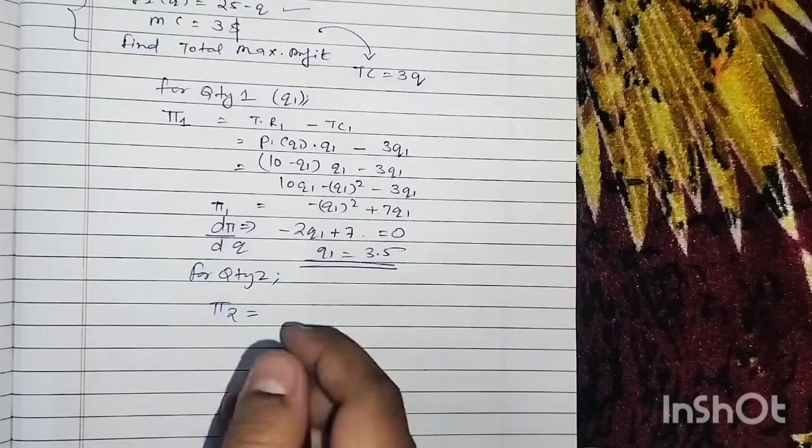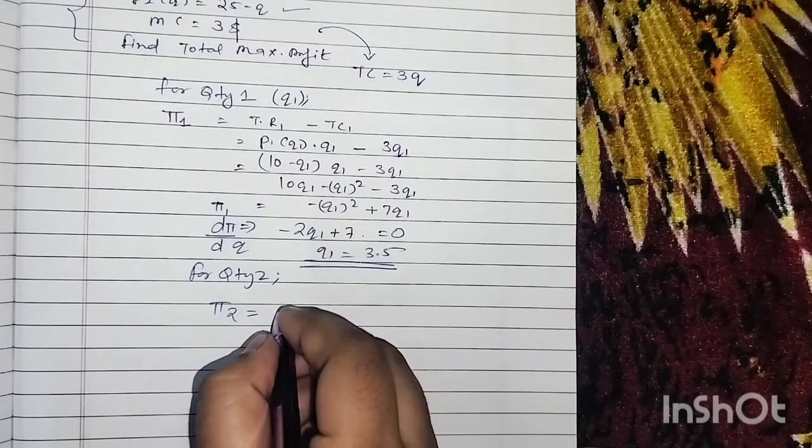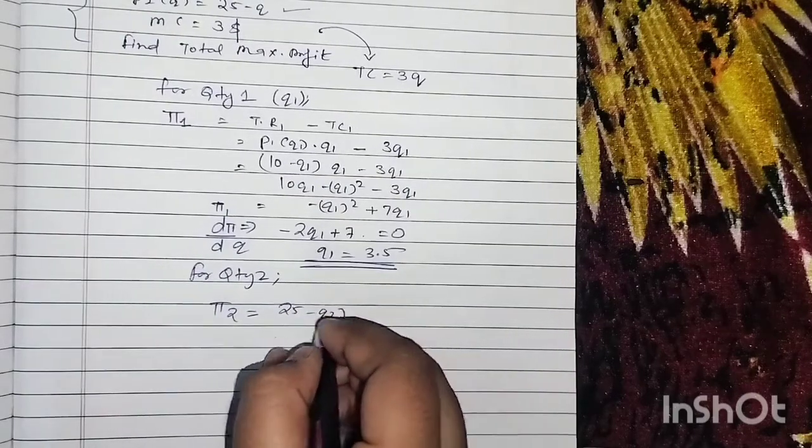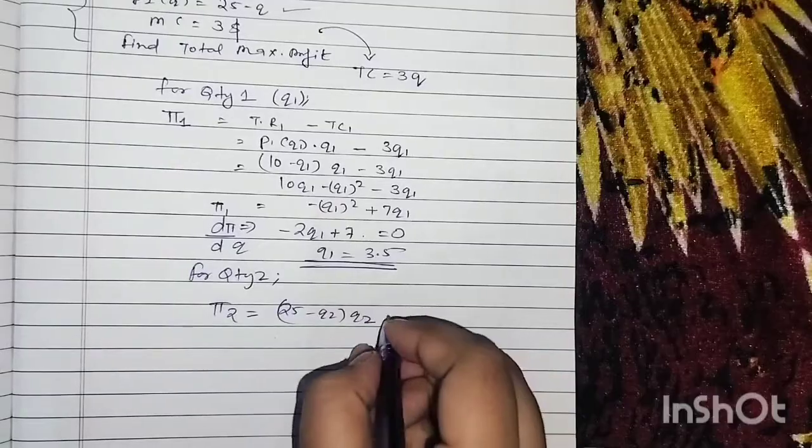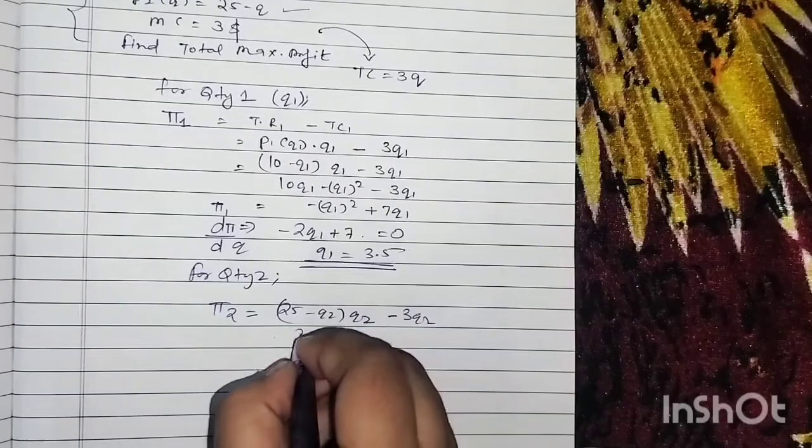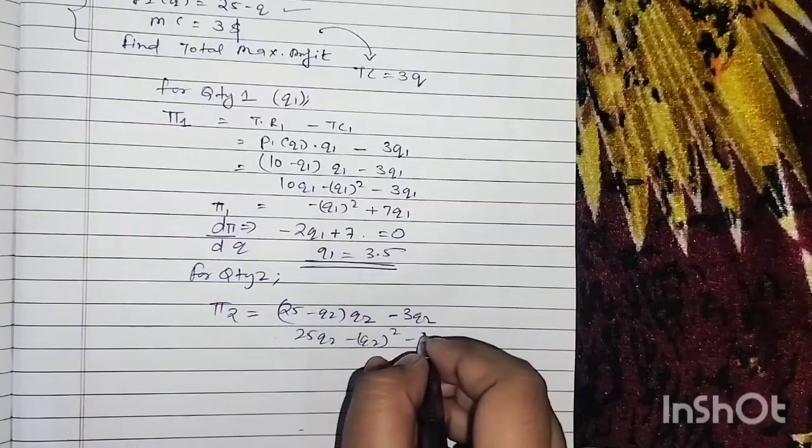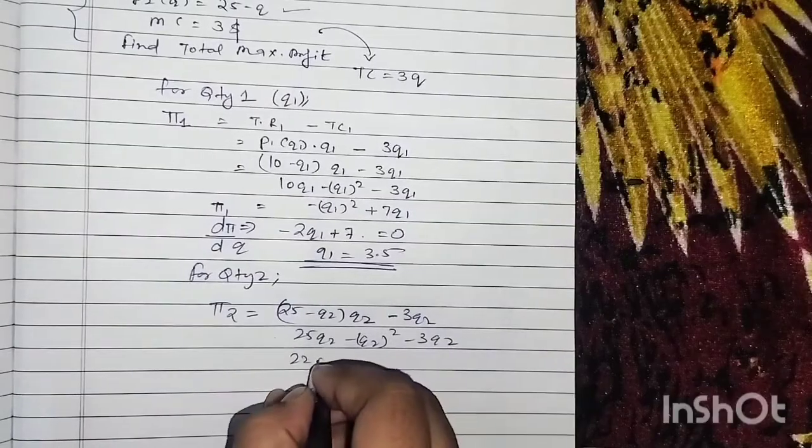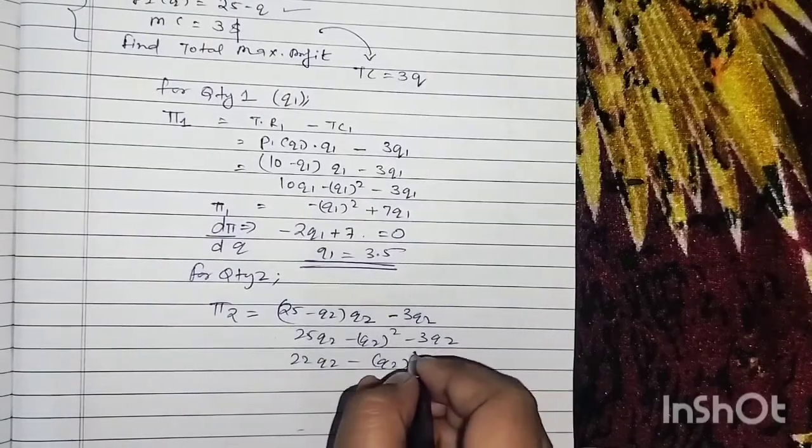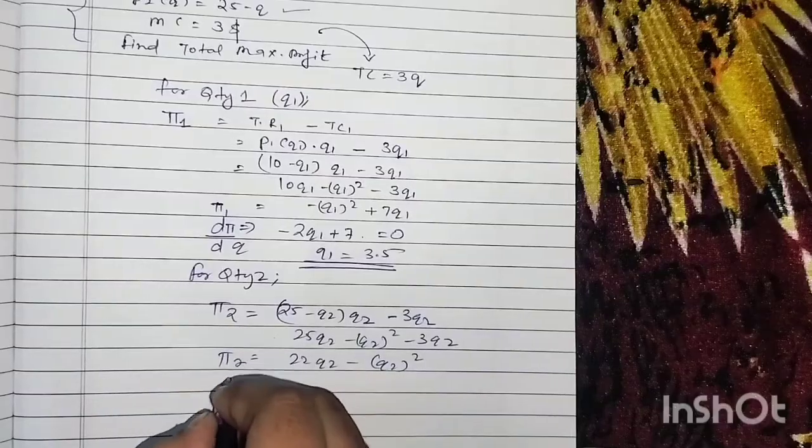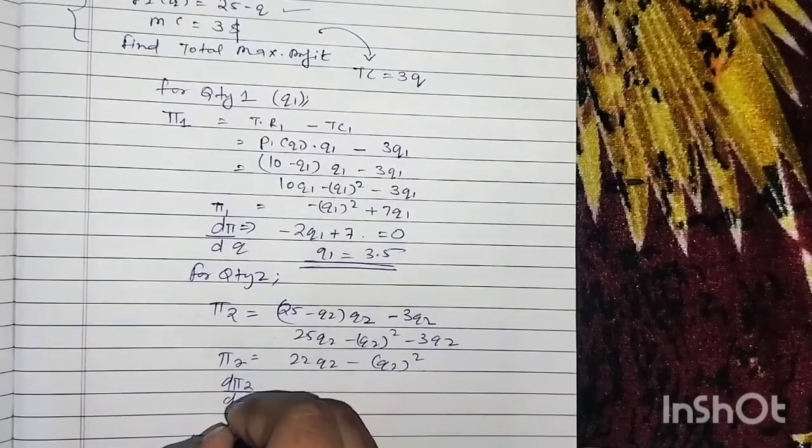Similarly, for quantity 2, you are obtaining π2, which will be (25 - Q2) times Q2 minus 3Q2, equals 25Q2 minus Q2² minus 3Q2, which is 22Q2 minus Q2². This is your π2. Now you are differentiating π2 with respect to Q2.